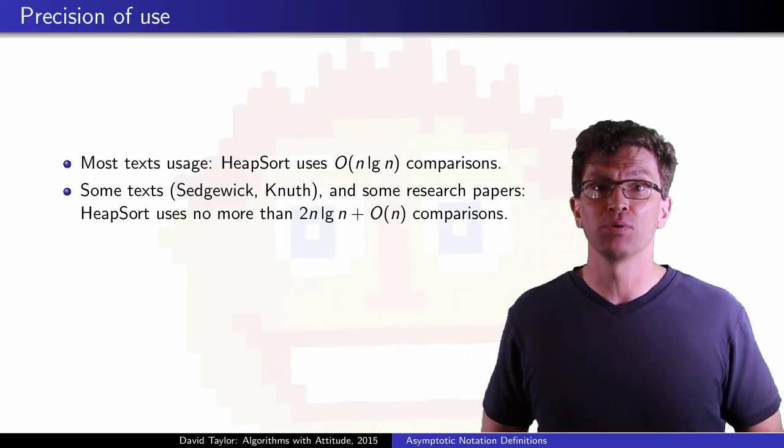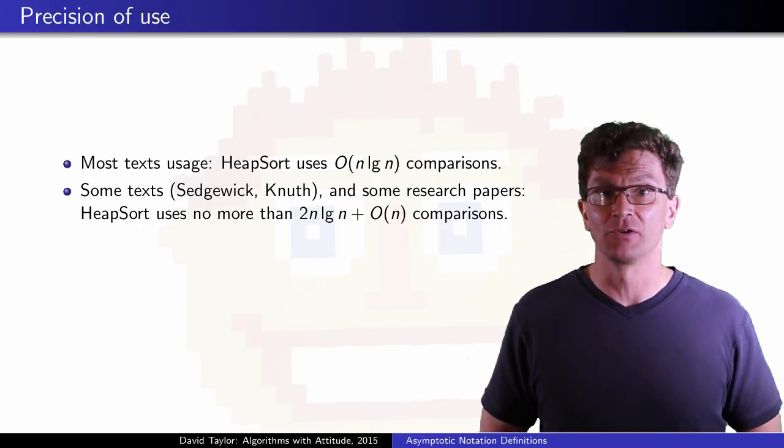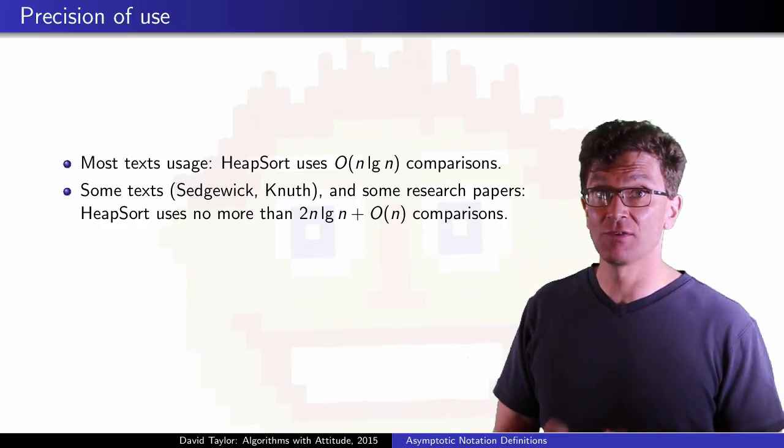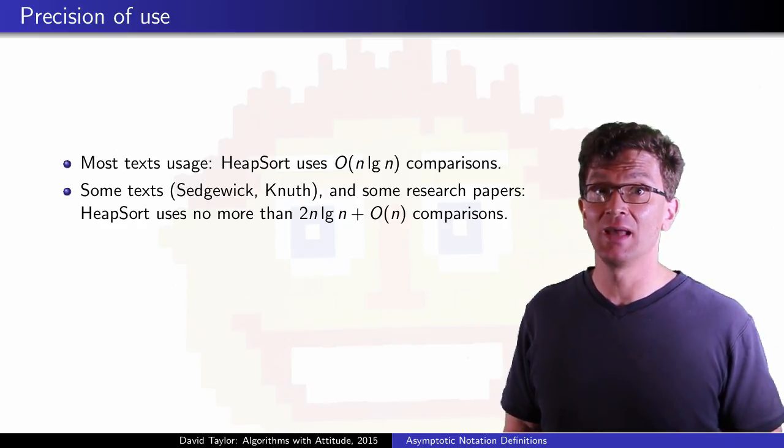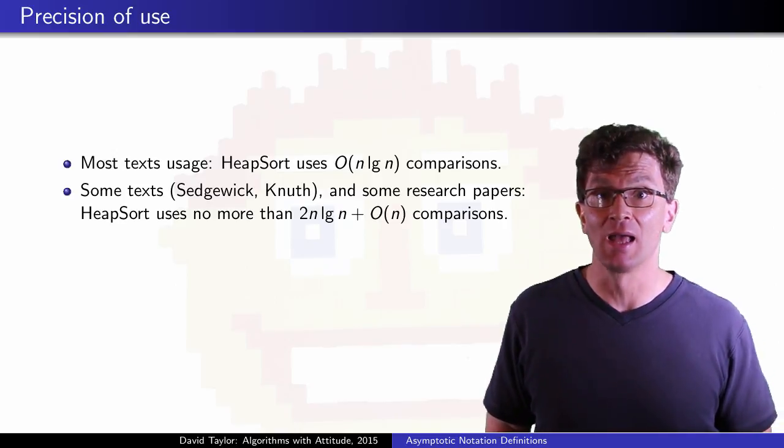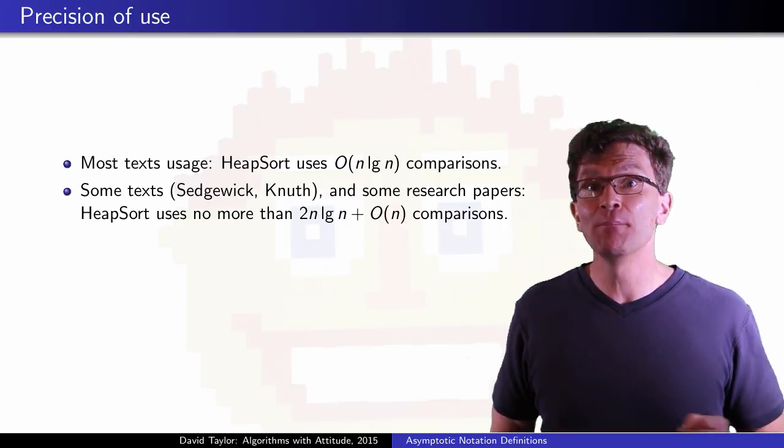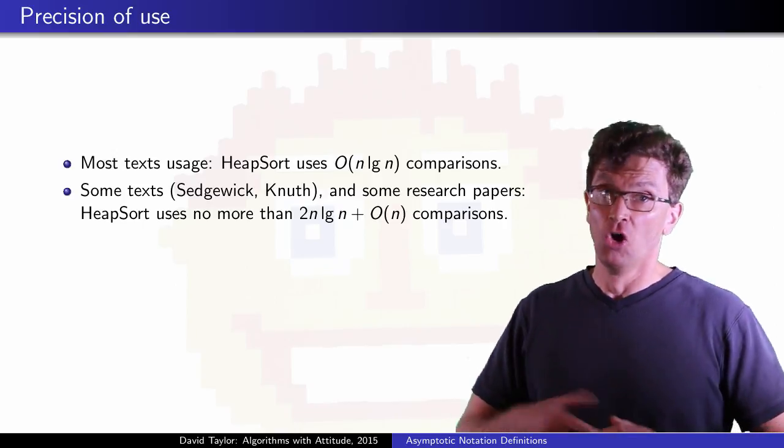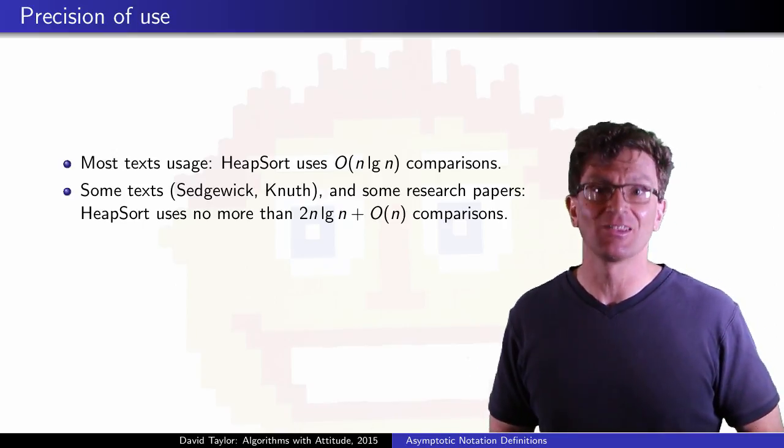They'll say something like HeapSort uses no more than 2n log n + O(n) comparisons. That is, take the set of functions O(n), to each of those functions in the set, add exactly 2n log n to get a new set, and the maximum number of comparisons used by HeapSort is no bigger than some function in that set.